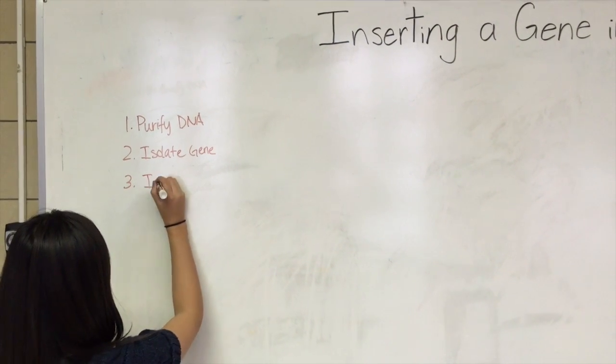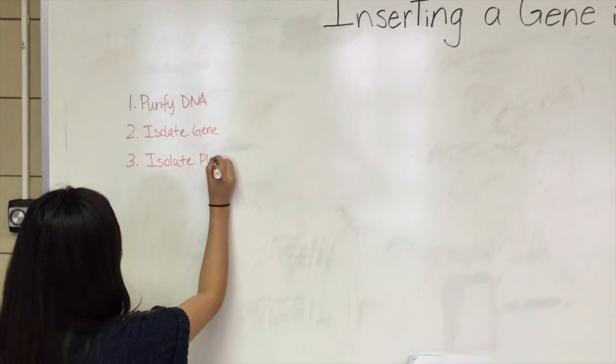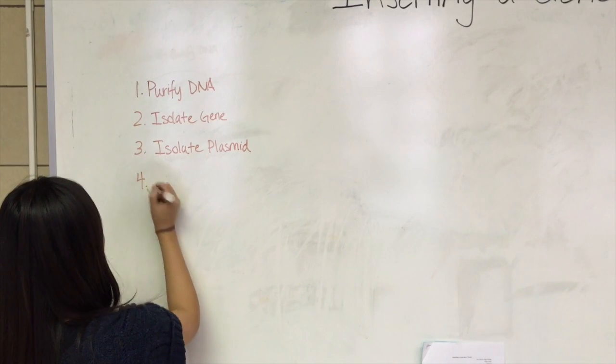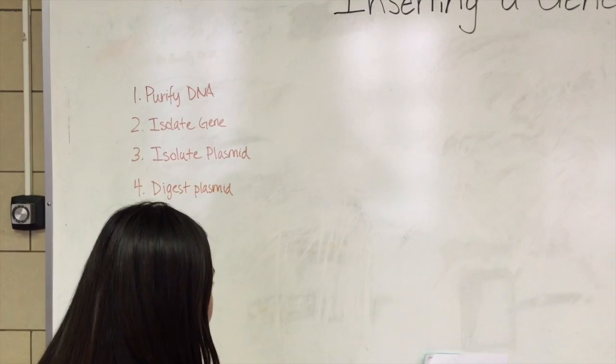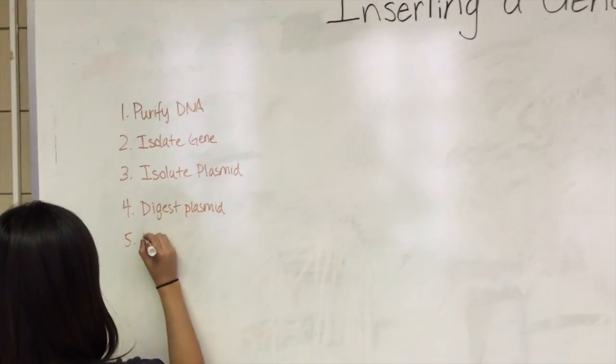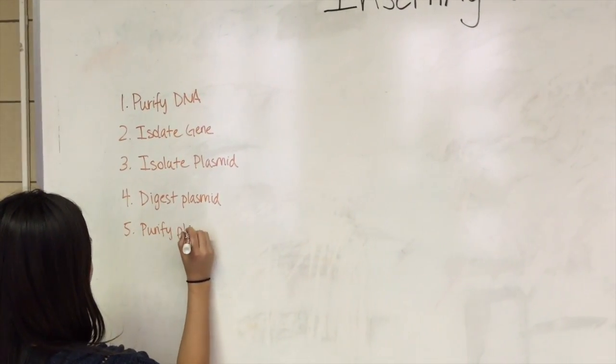The third step is to isolate the plasmid from the bacteria. The fourth step is to digest the plasmid with the corresponding restriction enzymes. The fifth step is to purify the digested plasmid.